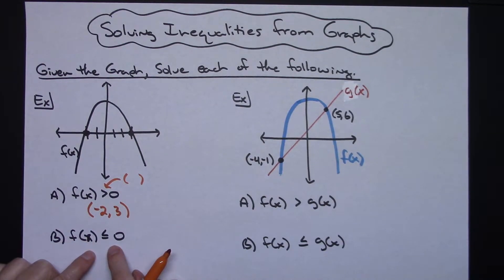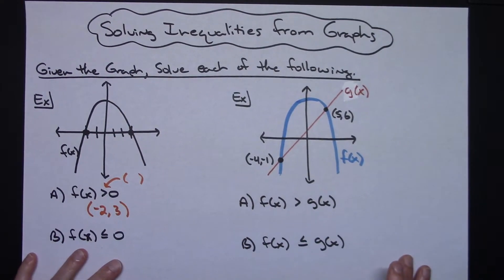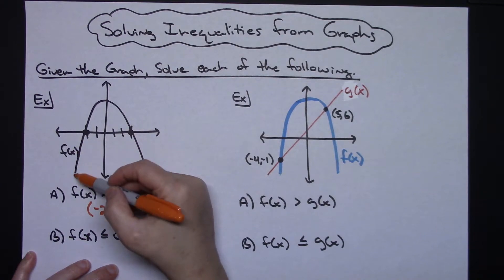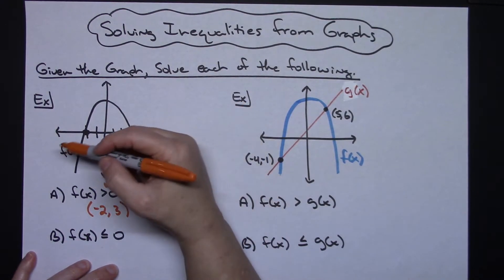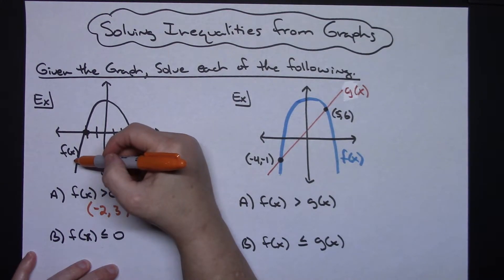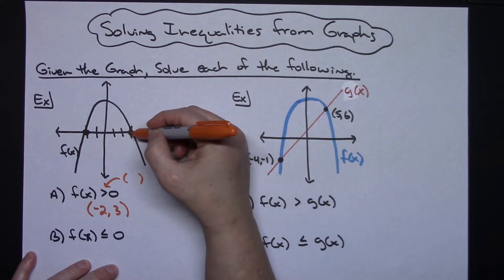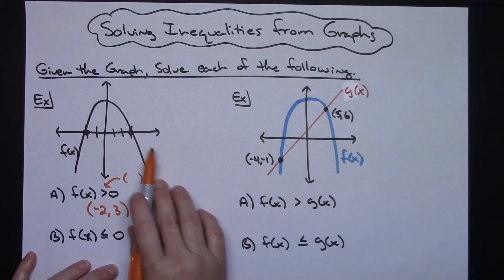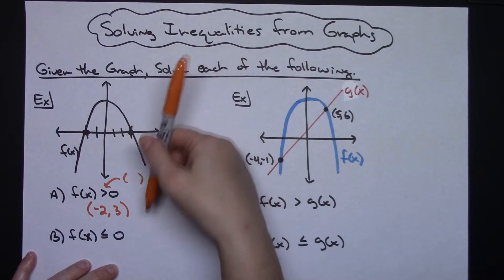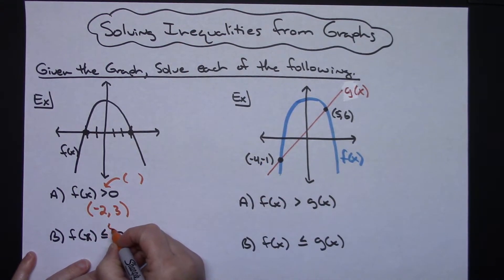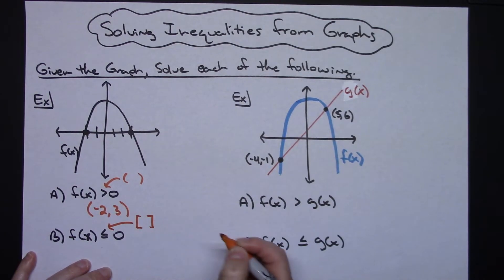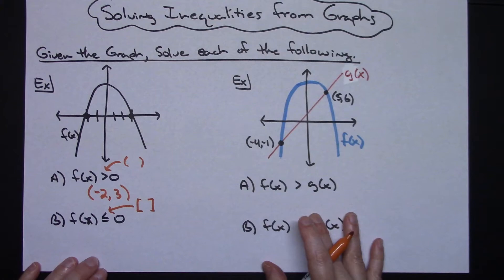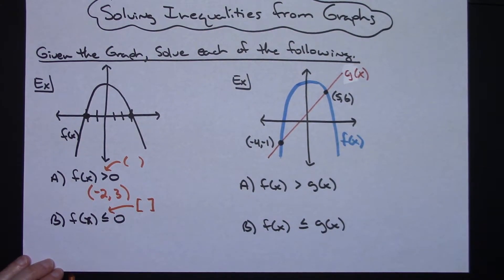Now part B: where is f of x less than or equal to zero? That means less than, or below the x-axis. It is less than over here and also less than over here. The x values for which it is less than go from negative infinity all the way up to negative 2, and then from 3 all the way to positive infinity. With the less than or equal to part, we'll use square brackets in our interval notation because we want to include those values.